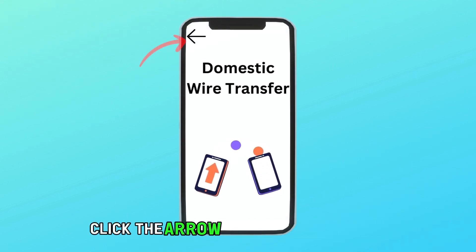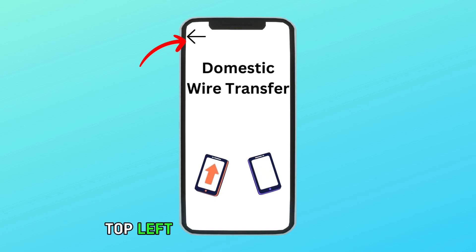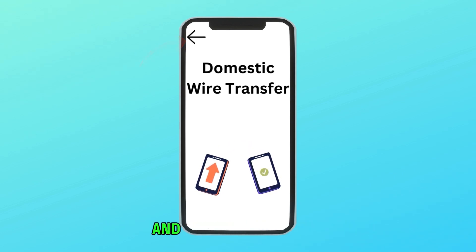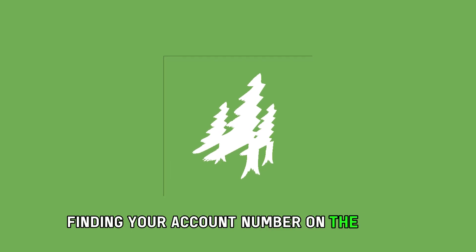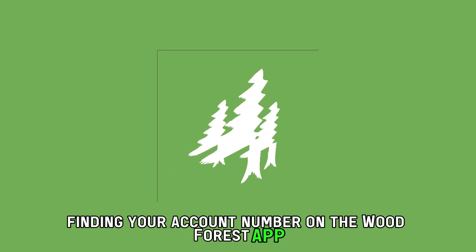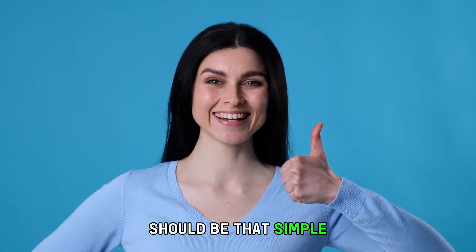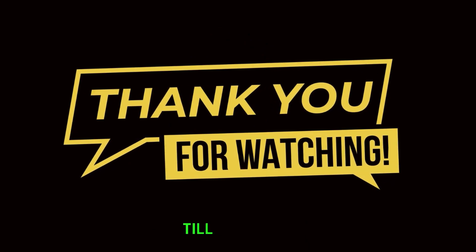Click the arrow button on the page's top left corner to exit the menu. And there you have it! Finding your account number on the Woodforest app should be that simple. Thanks for watching. Till next time.